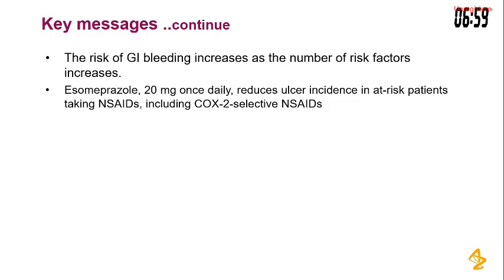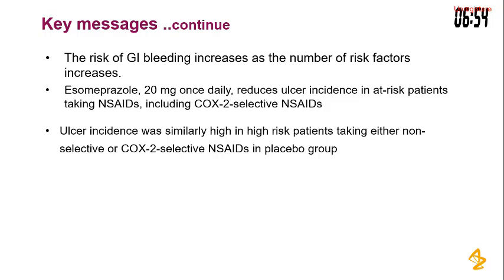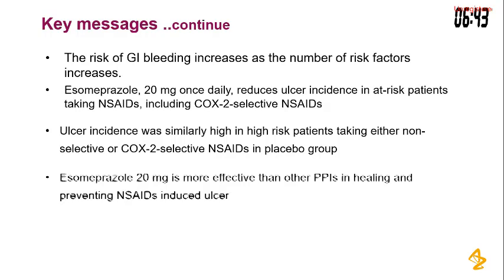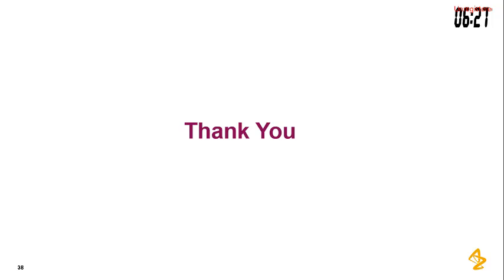Esomeprazole 20mg once daily reduces ulcer incidence in at-risk patients using NSAIDs, including COX-2 selective NSAIDs. Ulcer incidence was similarly high in high-risk patients taking either non-selective or COX-2 selective NSAIDs in the placebo group. Esomeprazole 20mg is more effective than other PPIs in healing and preventing NSAID-induced ulcer, and is well tolerated.